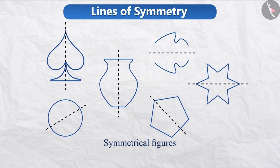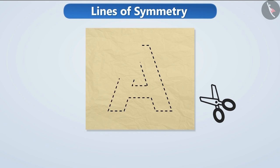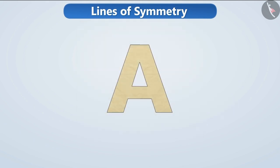Let's understand this with an activity. Take a piece of paper. Using scissors, cut the shape of the English alphabet A from it. Can you tell whether this figure is symmetric or not? Think for a while.